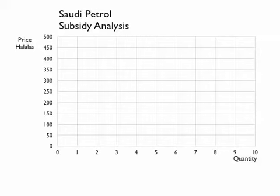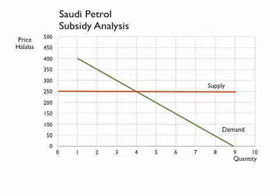In this video, we want to do an analysis on the Saudi petrol subsidy. Let's begin by drawing a demand curve, a downward sloping demand curve, and a supply curve. We note the intersection here. The supply curve is drawn flat to simplify things for an individual customer in the Saudi market.